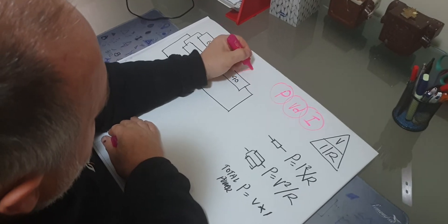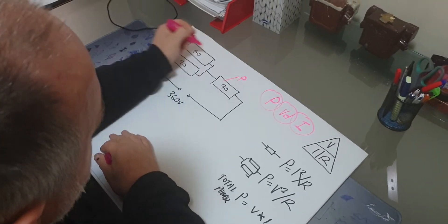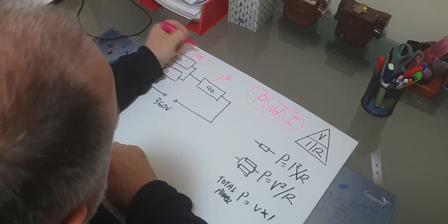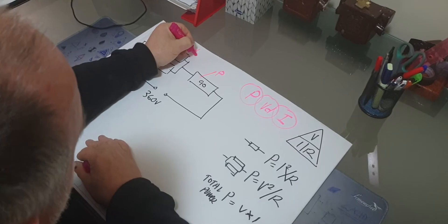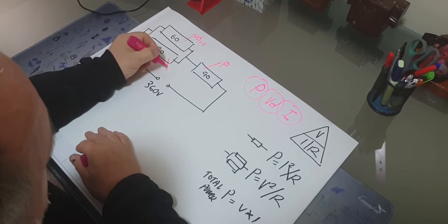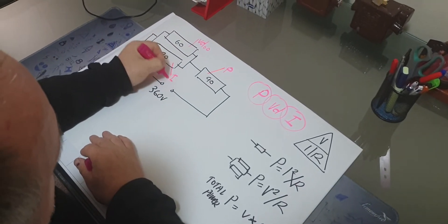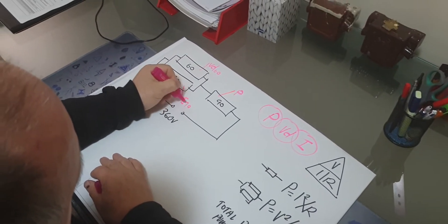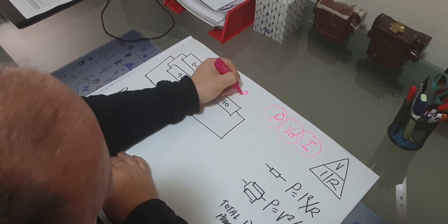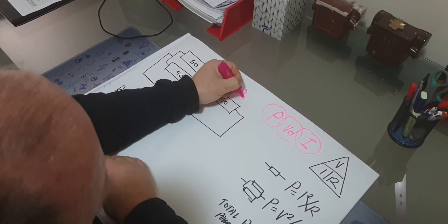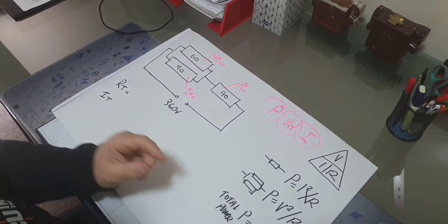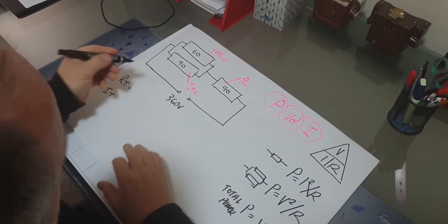The first one I'm going to do is find the power of this circuit. Then we'll do the voltage drop of the 60-ohm resistor, and find the current flowing through the 90-ohm resistor and the power for the 90-ohm. First step: resistance total.